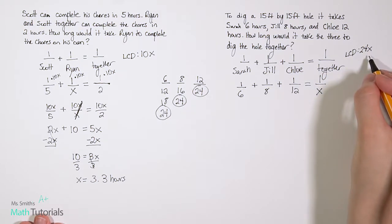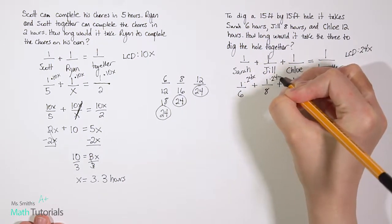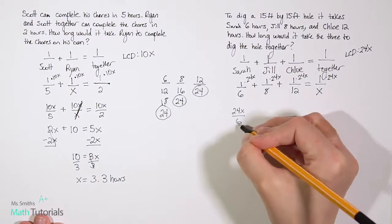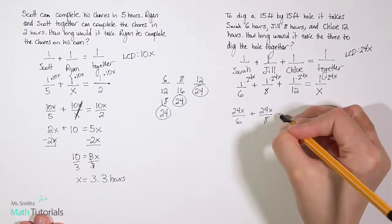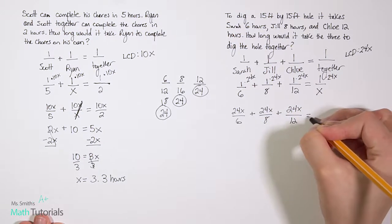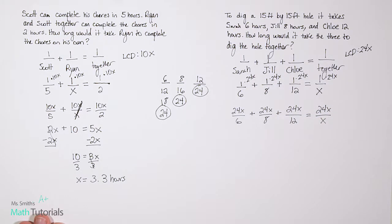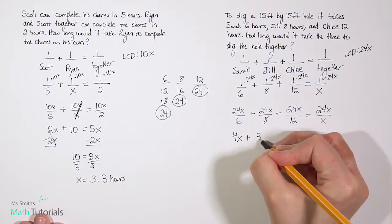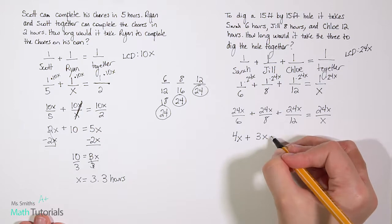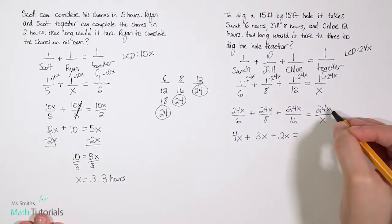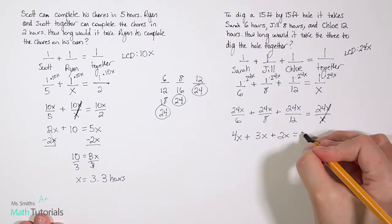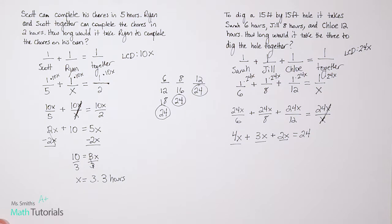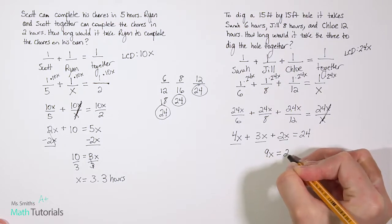Our next step is to multiply all the numerators by the LCD of 24x. And let's go ahead and rewrite that. So we've got 24x divided by six plus 24x divided by eight plus 24x divided by 12 equals 24x divided by x. Let's actually divide these down now. 24 divided by six we know is 4x. 24x divided by 8 would give us 3x. 24x divided by 12 would give us 2x. And notice here our x's, 24x divided by x, the x's cancel and we're just left with 24. We'd want to combine our like terms here. 4x plus 3x plus 2x. That's going to give us 9x equals 24.